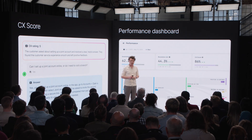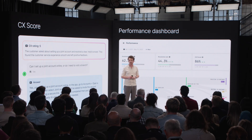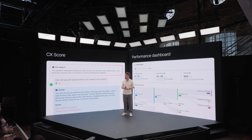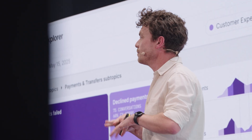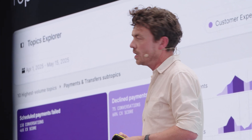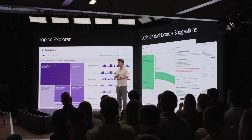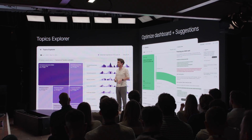We believe CX score is a much better way to measure customer experience — much stronger, more robust, full coverage. It's way better and we want people to use it. With the Performance Dashboard you can look at CX score, resolution rate, and involvement rate all together. We have a new Topics Explorer where you can look at what your customers are saying — full coverage of your entire customer base and conversation history. You can drill up, drill down, filter by CX score, filter by resolution rate.